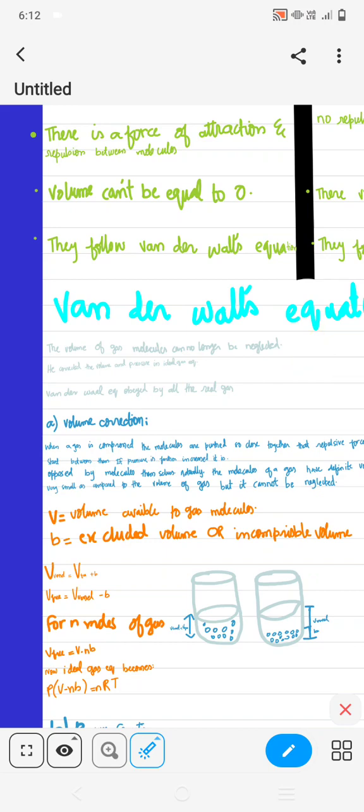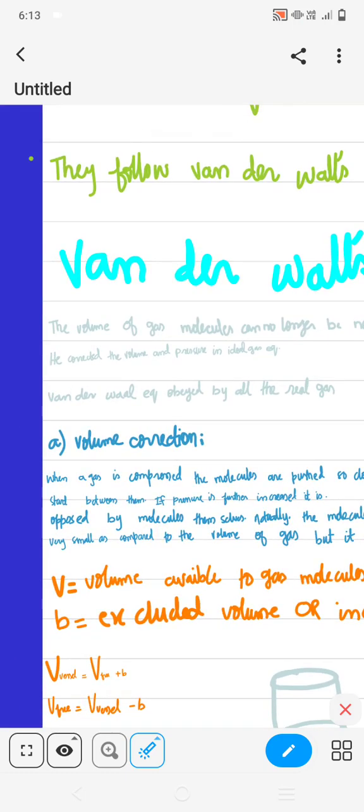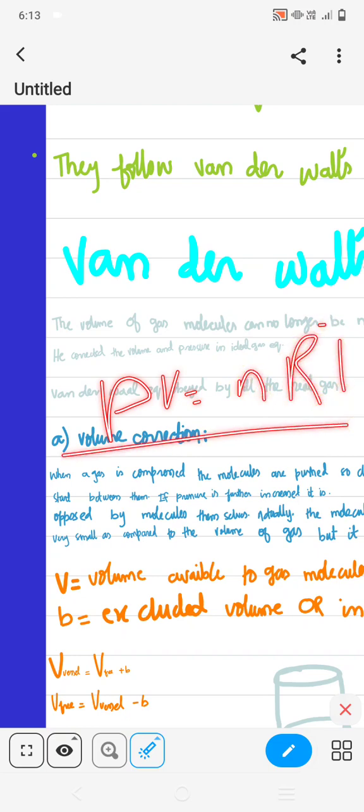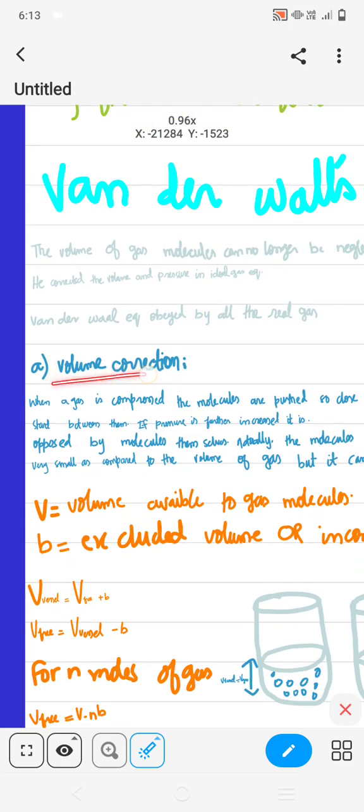Then he corrected the volume and the pressure in the ideal gas equation PV equals nRT. Van der Waals corrected it. Van der Waals equation is obeyed by all real gases. Every real gas follows Van der Waals equation, not PV equals nRT, which is followed by ideal gas.